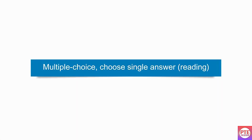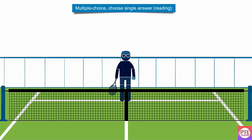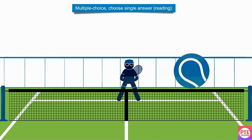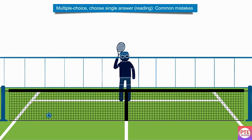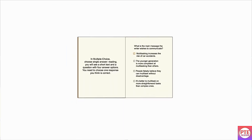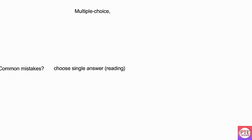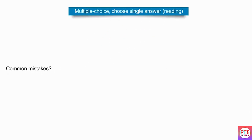Multiple-choice choose single answer reading. Common mistakes in multiple-choice choose single answer reading. You will see a short text and a question with four answer options. You need to choose the one response you think is correct.